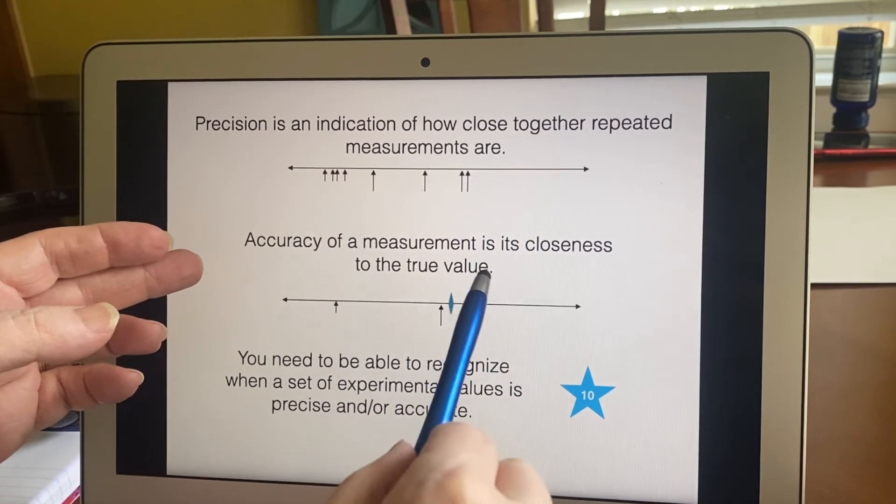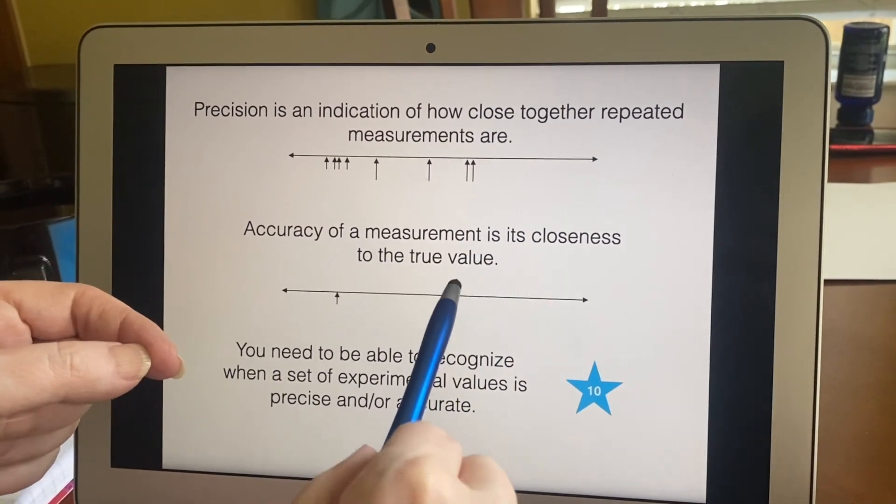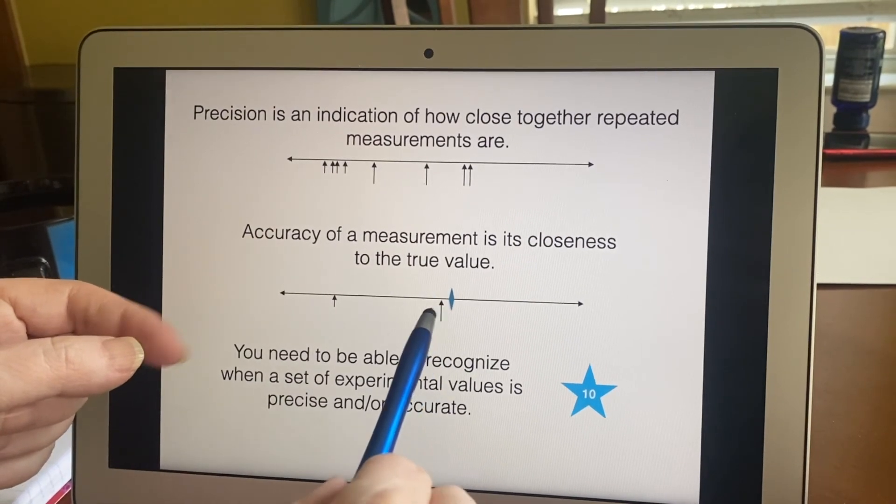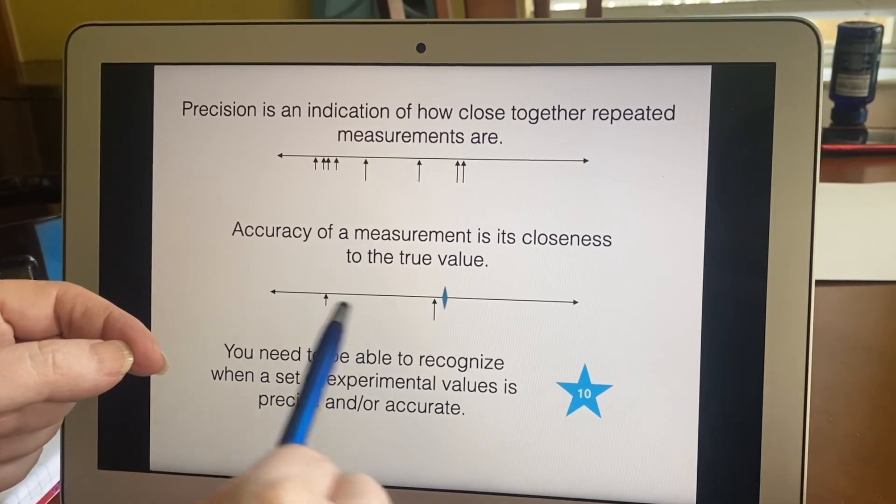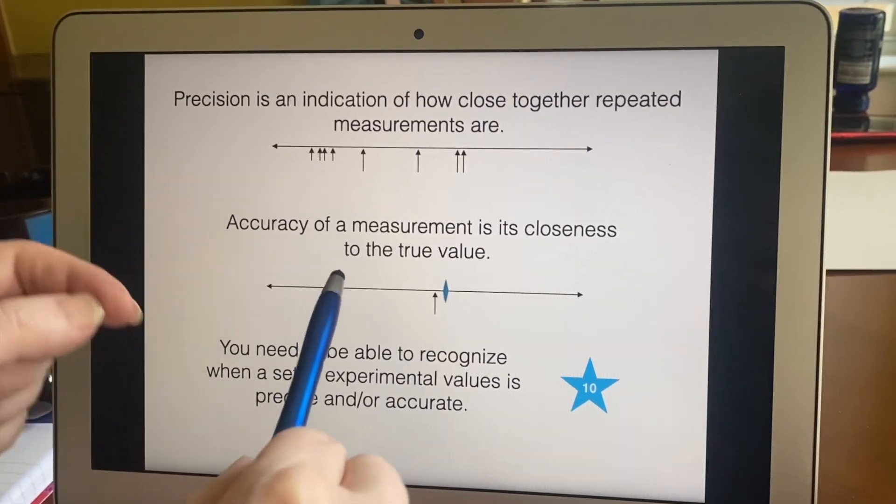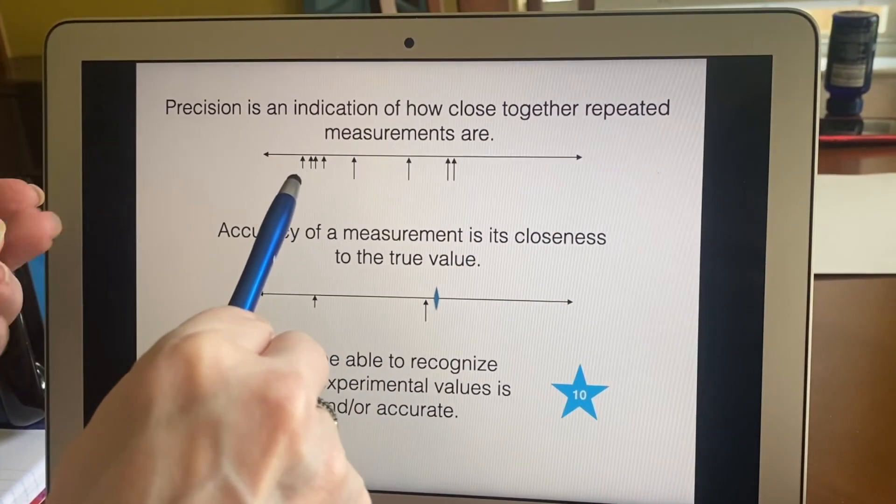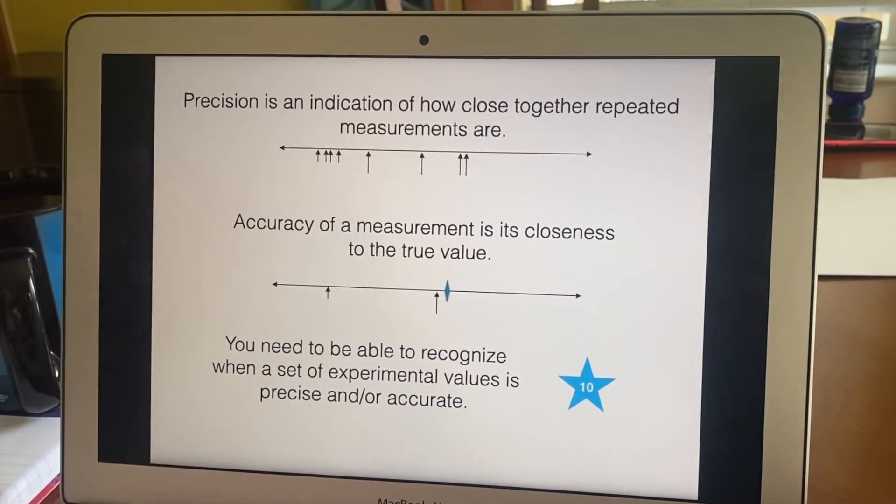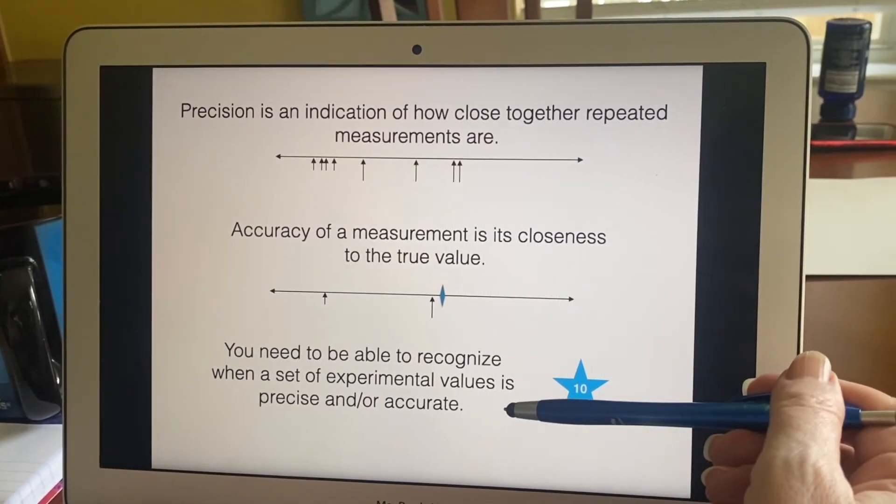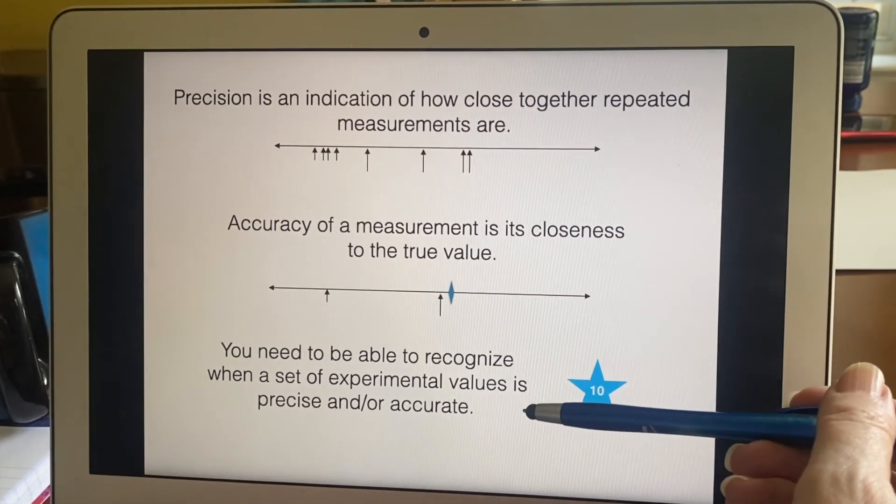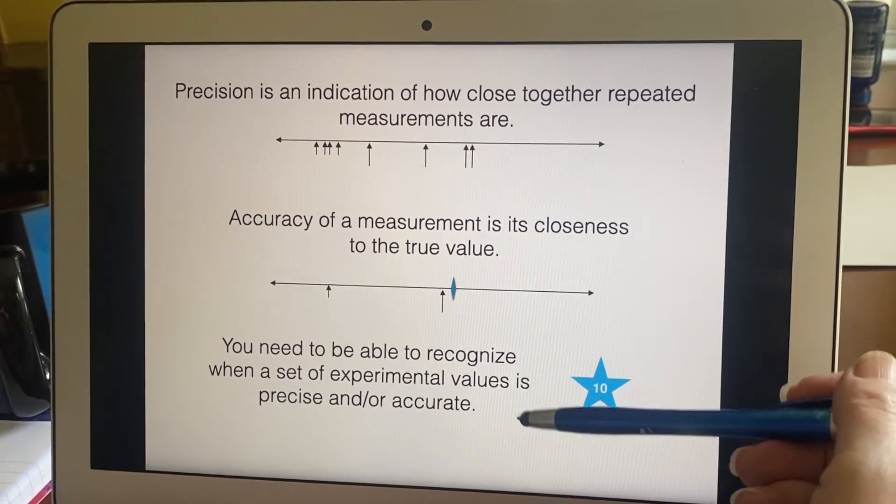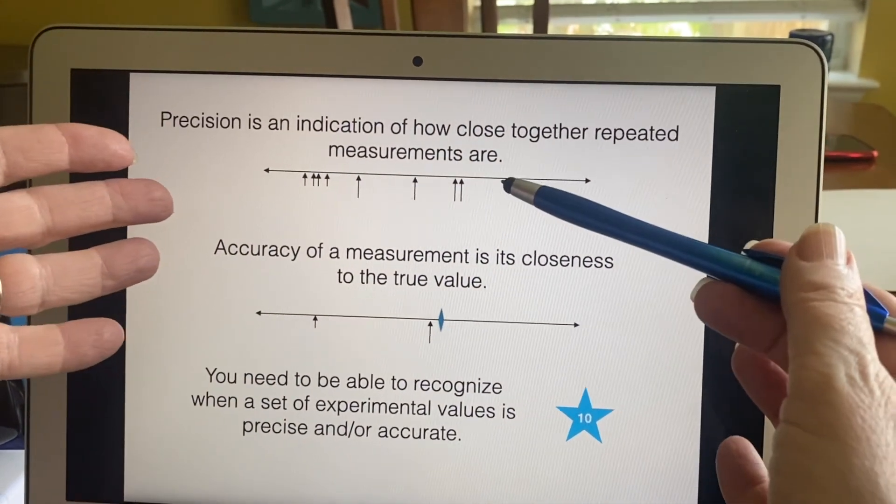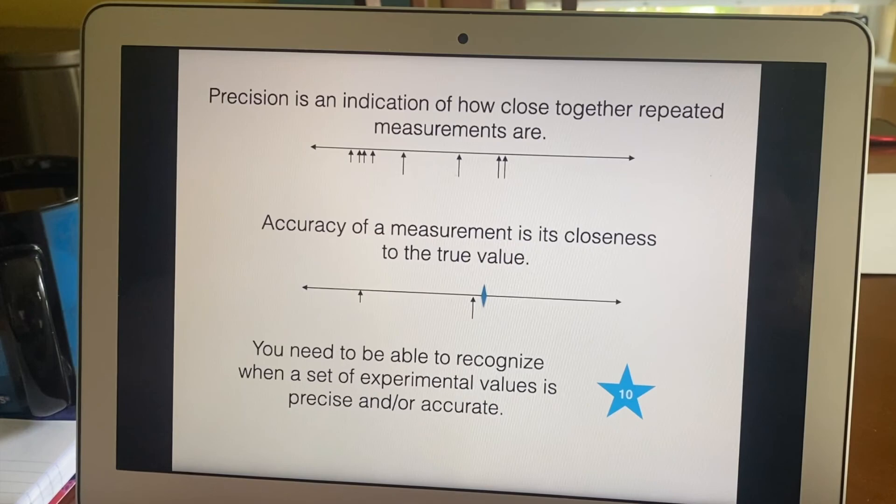Accuracy. How close is it to the true value? So you would mark on there, what is the accepted value? And then you'd say, oh, how close did I get to that? Yeah, this set, although it was quite precise, was not near the actual value. So you need to make sure that you understand how to figure out whether something is precise. And after that, whether it is accurate from either something graphical or a list like we had previously.